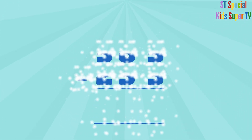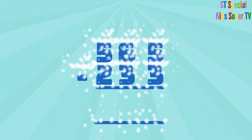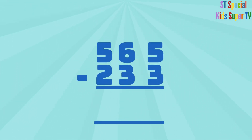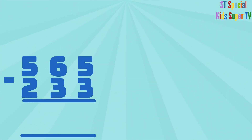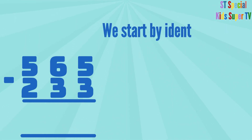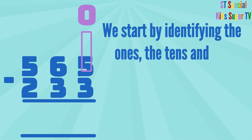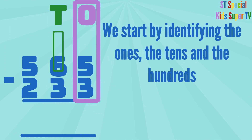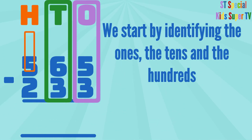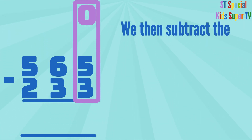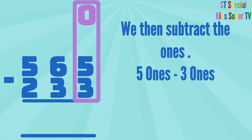Let's now calculate 565 minus 233. We start by identifying the ones, the tens, and the hundreds. We then subtract the ones: 5 ones minus 3 ones.